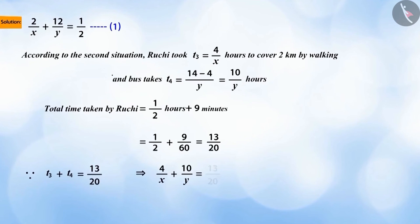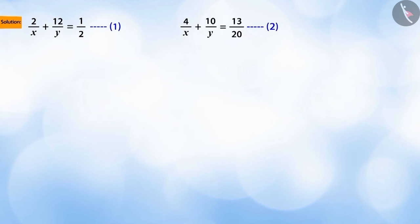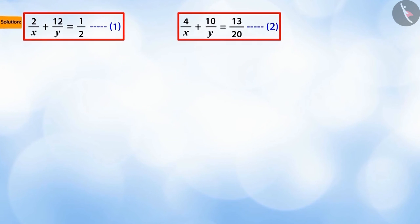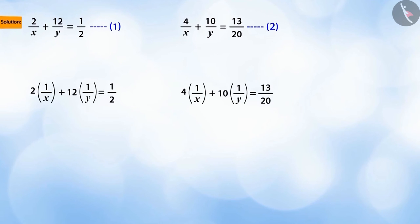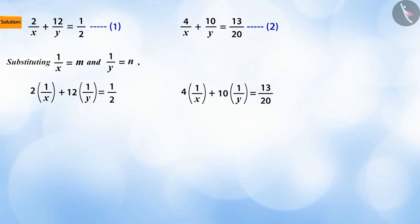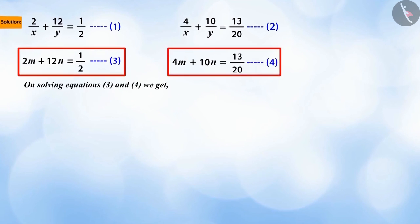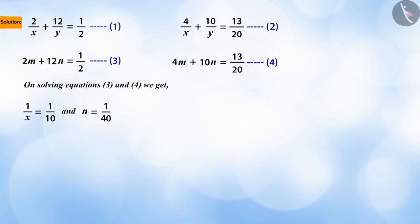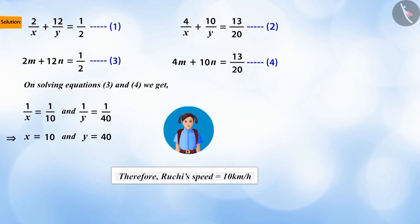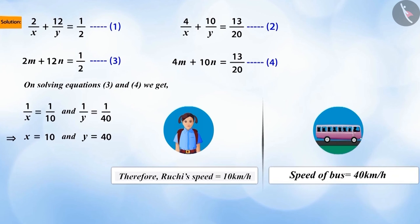Similarly, situation two gives us our second equation. You can see that equations one and two are not linear equations. If we write equations one and two in this form and replace 1/x by m and 1/y by n in both equations, then we get equations three and four. By solving equations three and four, we get the value of m as 1/10 and n as 1/40. Now, since m = 1/x and n = 1/y, this gives us x = 10 and y = 40.